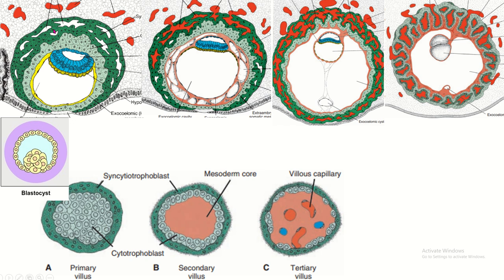Within the syncytiotrophoblast, some cavities start to develop. The syncytiotrophoblast erodes the maternal blood vessels, and the empty spaces within are filled by maternal blood. Also in the second week, the extra-embryonic mesoderm starts to develop.